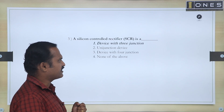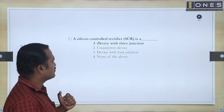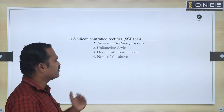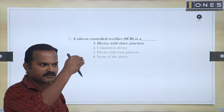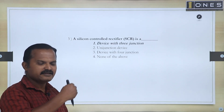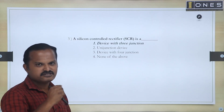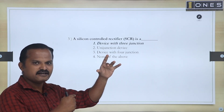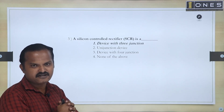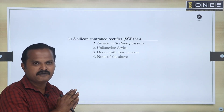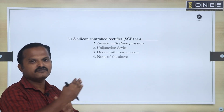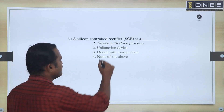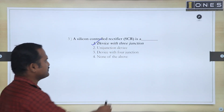Third question: A silicon controlled rectifier, SCR, is a dash. The choices are: a device with three junctions, a uni-junction device, a device with four junctions, or none of them. In the SCR structure, we have four layers with three junctions — J1, J2, J3. In forward polarity, the first and last junctions are forward biased, while the middle junction is reverse biased. SCR has three modes: forward blocking, reverse blocking, and forward conduction. So the answer is: it is a device with three junctions.